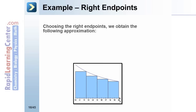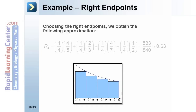Choosing the right endpoints, we obtain the approximation R4 equals 1/4 times 4/5 plus 1/4 times 2/3 plus 1/4 times 4/7 plus 1/4 times 1/2, which equals 533/840, approximately 0.63.